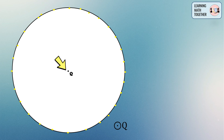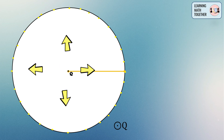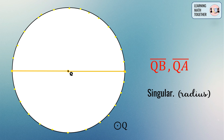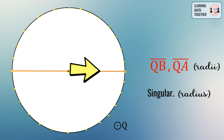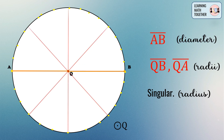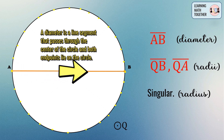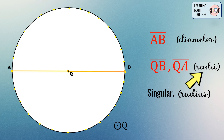Next, we take the distance from the fixed point or the center of the circle to any point on the circle. This line segment is what we call radius. The plural form of radius — meaning if there are many radii — we call that radii. The line segment that passes through the center of the circle is what we call diameter. In this figure we have line segment AB as our diameter, and we have two radii: line segment QB and line segment QA.